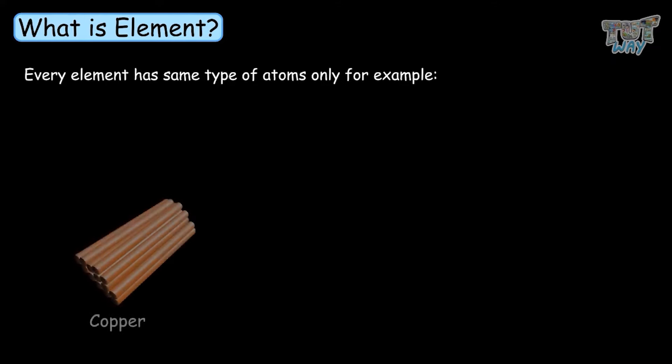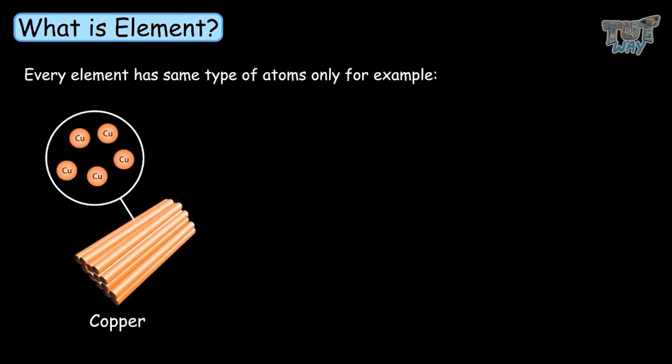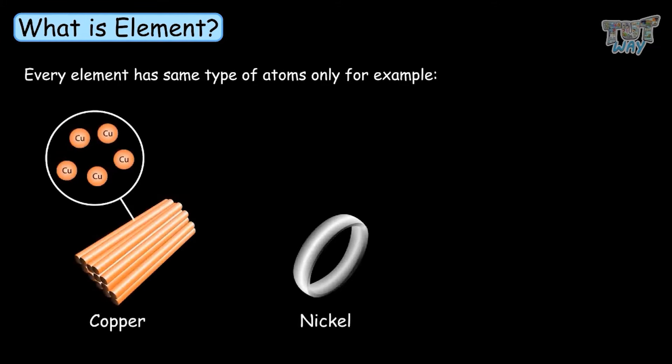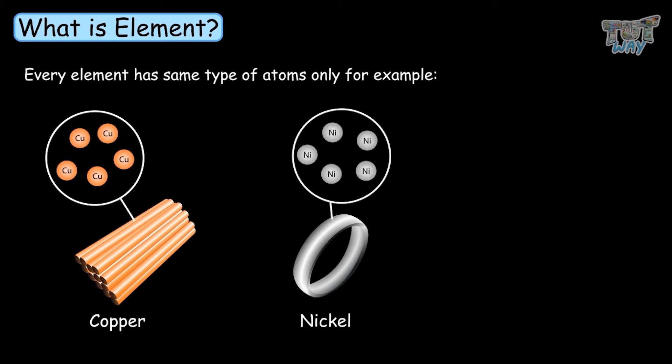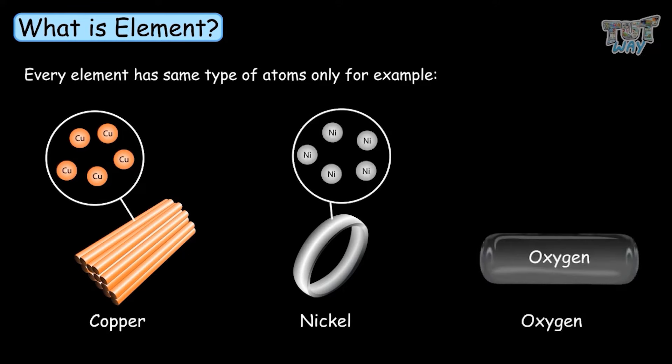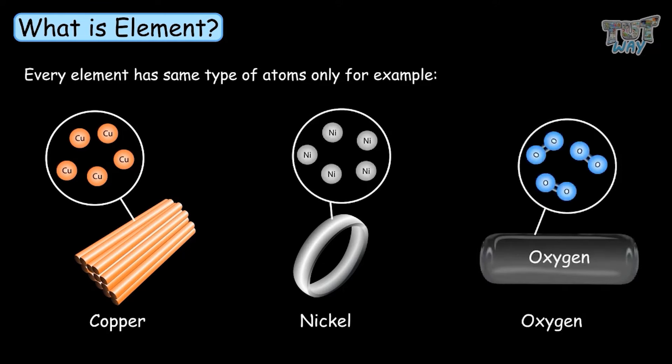For example, copper will only have copper atoms, nickel will only have nickel atoms, and oxygen will only have oxygen atoms. So now we know what elements are.